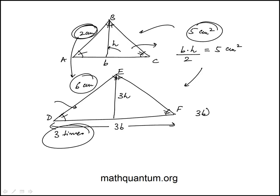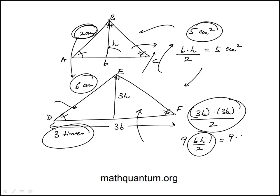This is what we're looking for, and you'll notice this is 9 times bh over 2, which is the area of the original triangle. So the area of this triangle would be 9 times 5, or 45 square centimeters.